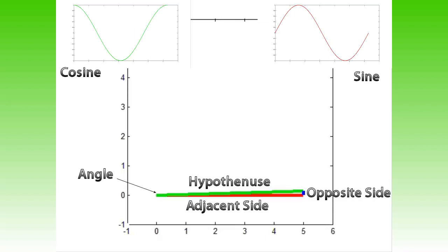Looking at the graphs of the sine and cosine, we can see that the cosine is 1 where the angle is 0. Therefore, the relation between the adjacent side and the hypotenuse is the cosine.